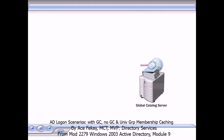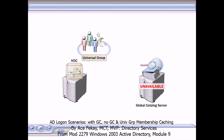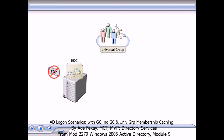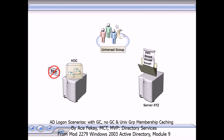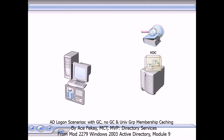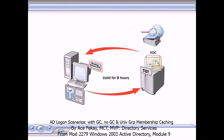When a global catalog server is not available, the KDC cannot obtain the SIDs for the universal groups. In such cases, the KDC does not issue a TGT for the user because the unavailable universal groups may be named in an explicit deny permission in a resource's DACL. If the KDC issued a TGT that did not include universal group membership for the user, it might compromise security. The global catalog must be available for the user to obtain a TGT. TGTs are valid for 8 hours by default. After a session ticket is granted, a user can use it until he logs off or the session ticket expires. This is true even if the global catalog becomes unavailable during that time.